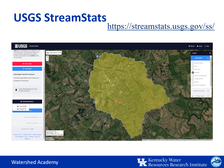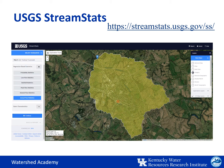Then click continue. After clicking continue, you can select different statistics and it will predict the stream flows under different conditions. There you can see low flow, bank full, and peak flow statistics. Select as many as you want and then press continue to help you build a related report. You can also click the drop down arrow next to basin characteristics on the left, which will enable you to choose additional information that you may want in your report.